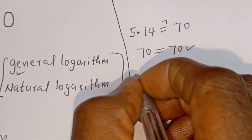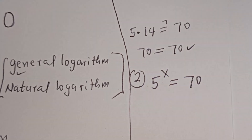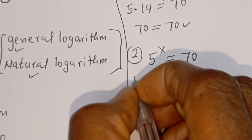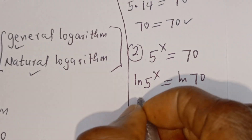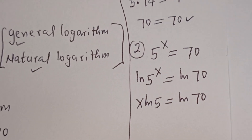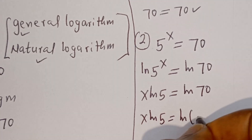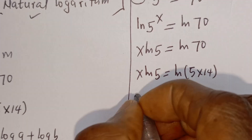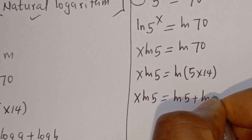Let's consider the second method. We have 5 to the power of X is equal to 70. Here we want to use the natural log. Let's take the natural log of both sides. We have ln of 5 to the power of X is equal to ln of 70. This gives X ln of 5 is equal to ln of 70. Now ln of 70 can be written as ln of 5 multiplied by 14. Then we have X ln of 5 is equal to ln of 5 plus ln of 14.